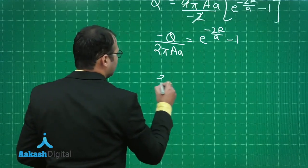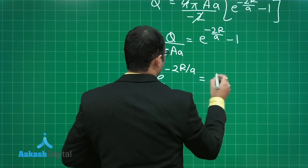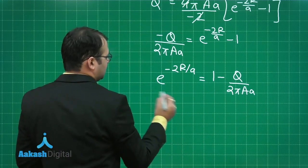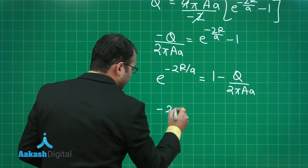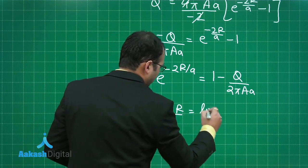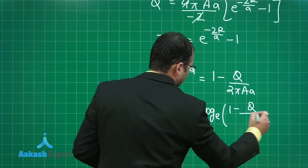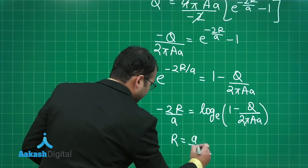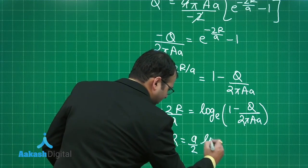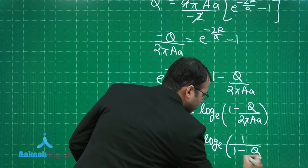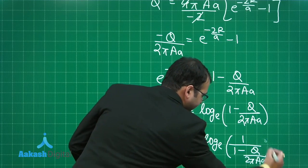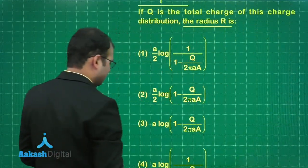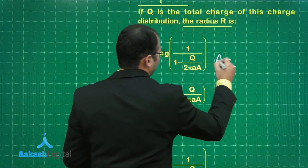Taking the natural log of both sides: −2R/a = ln[1 − Q/(2πAa)]. Solving for R: R = (a/2) × ln[1/(1 − Q/(2πAa))]. Checking the four options, the best suited answer is option 1.